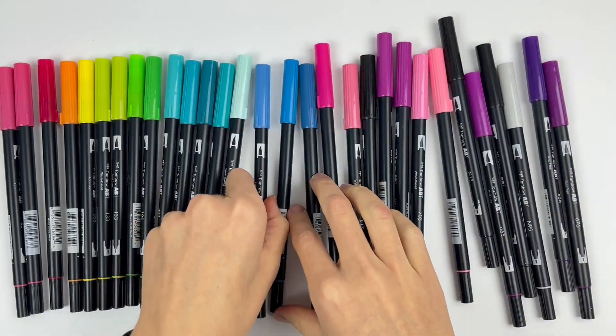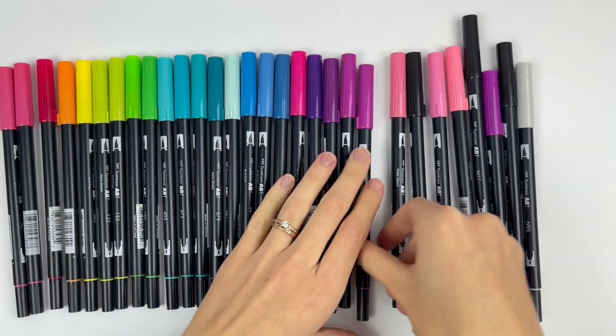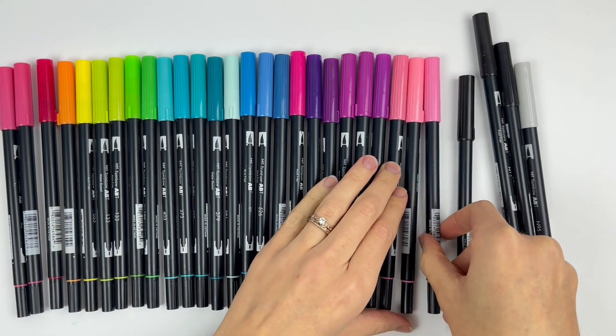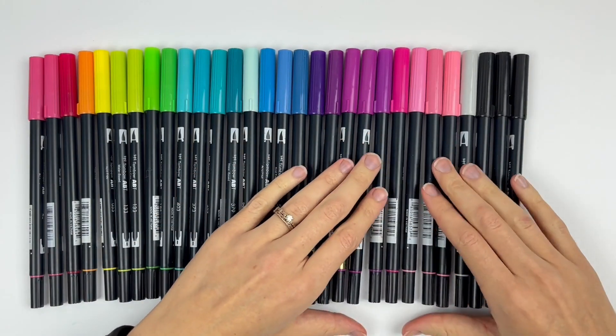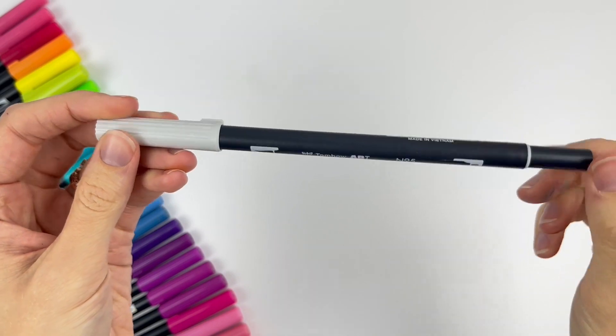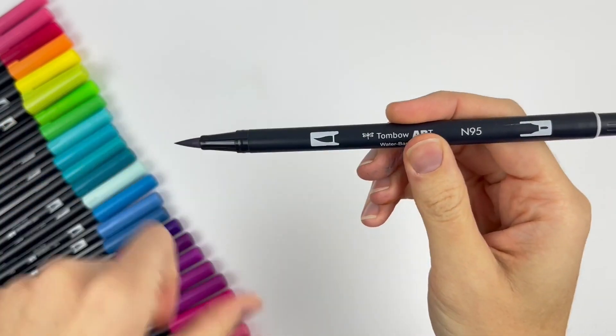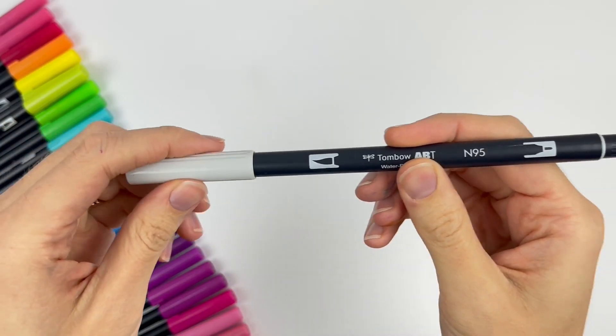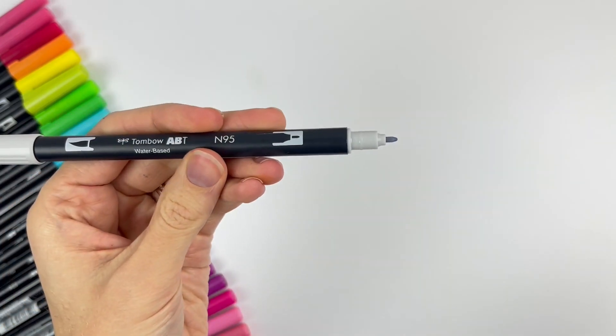I have some random sets I've gotten and some individual colors because they're pretty easy to find. I like Tombow Dual Brush Pens, but they're not my favorite just because the tip isn't as bouncy as I like, and it's a little softer.